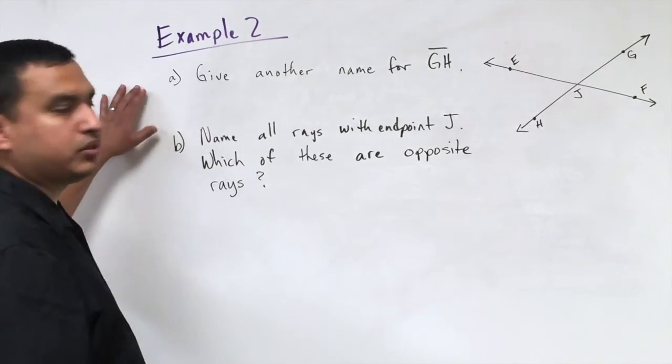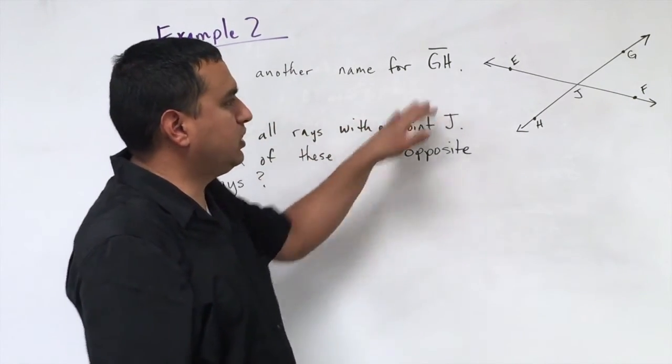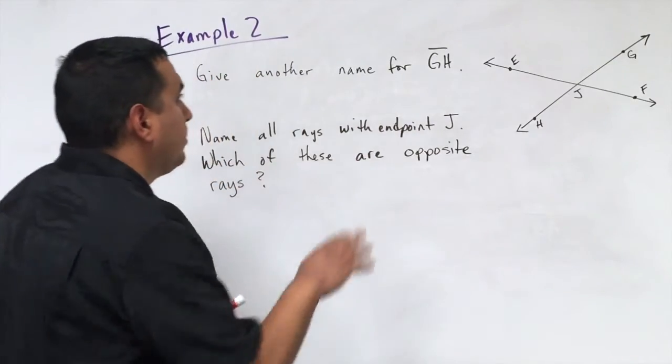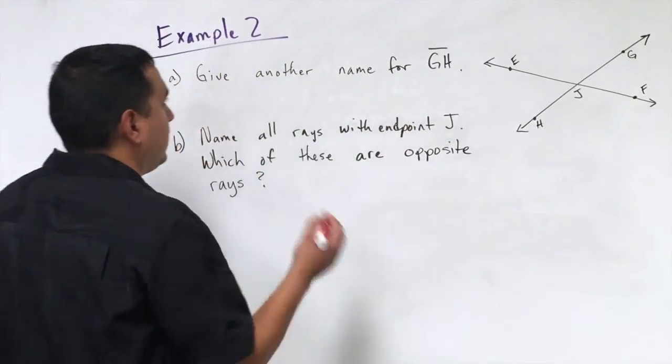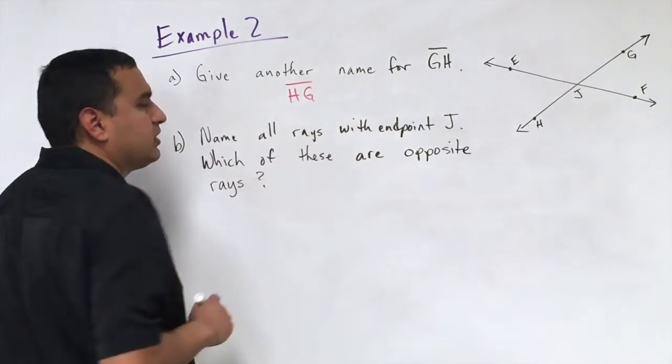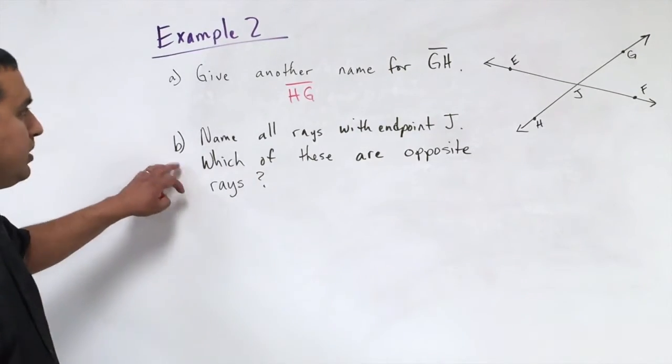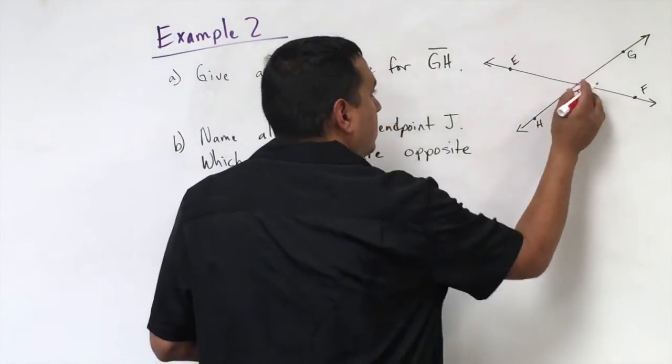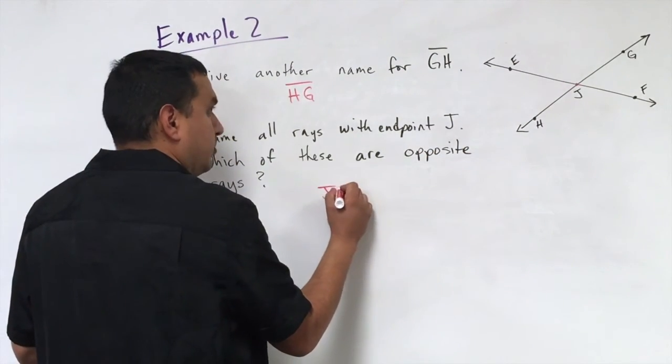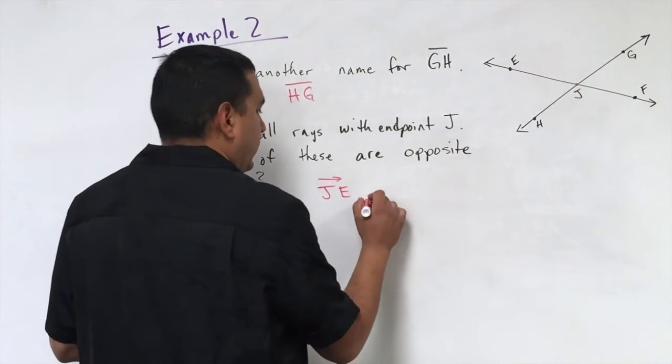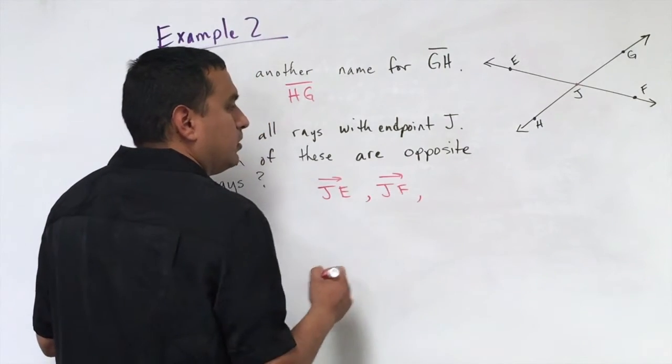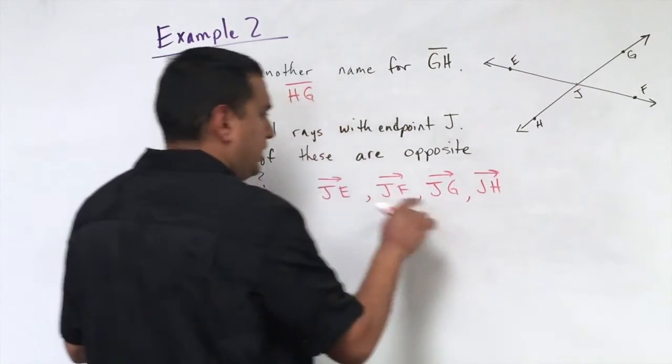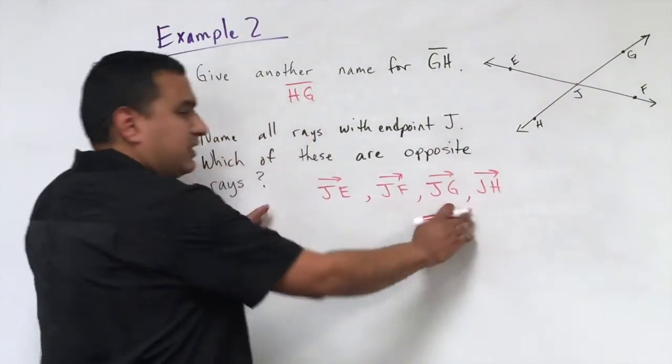For example two, we have two parts. We have part A that says give another name for segment GH. So segment GH would be this piece from point G to point H. With segments, we can reverse the order of the endpoints, and it's still the same segment. So it's okay for me to say segment HG. When it's the rays, though, remember that that's when the endpoint matters. So name all rays with endpoint J. So from J, going in either direction. So one of my rays would be ray JE. I would also have ray JF. Then we would have ray JG, and ray JH. Remember that the arrow always has to go towards the right as far as the name is concerned.